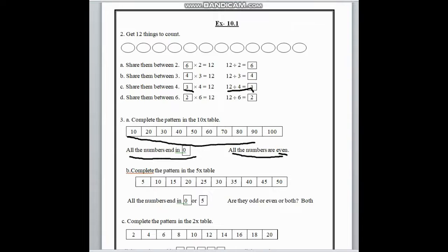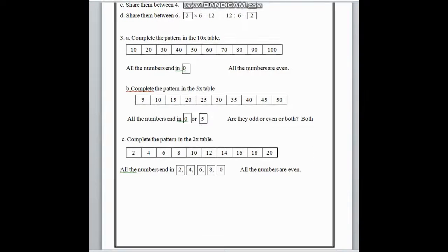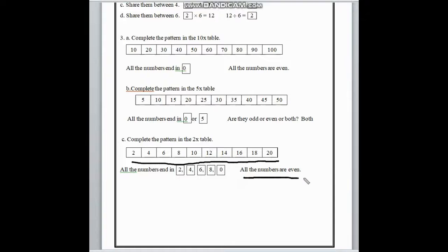In number C, complete the pattern in the 2 times table. We have to complete the blank boxes by the 2 times table. All the numbers end in 2, 4, 6, 8 and 0. And we know 2, 4, 6, 8, 0 are even numbers. So here we have to write that all the numbers are even.